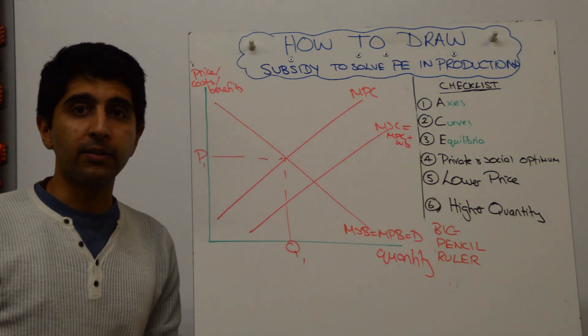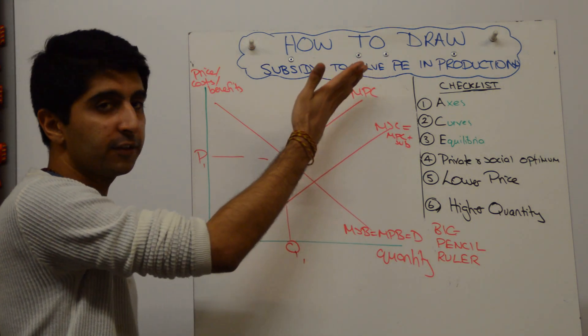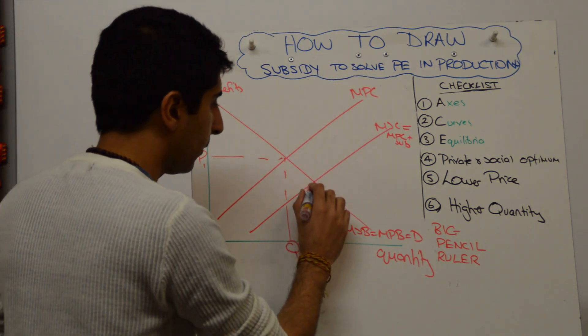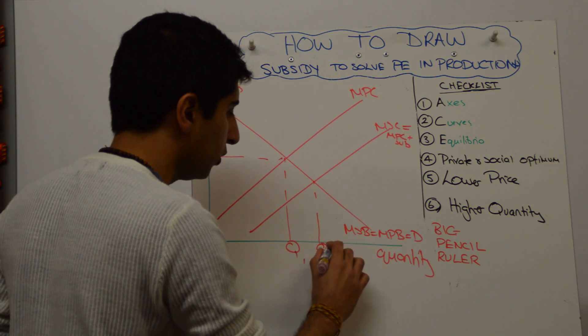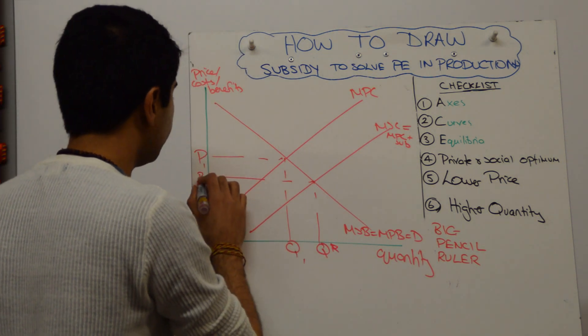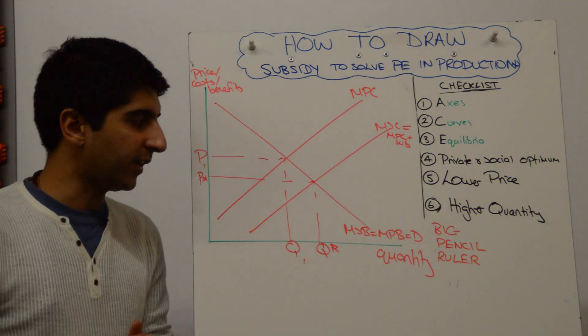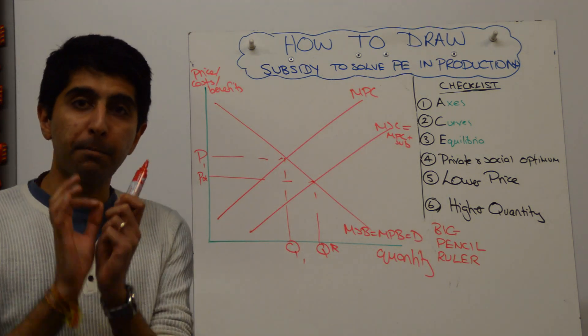Adding that on implies that there is a subsidy that shifted this curve downwards, which means that a new equilibrium is formed. And what you might want to do is label this Q star and label this P star to imply that we've hit the socially optimum level perfectly, both quantity and price perfectly here.